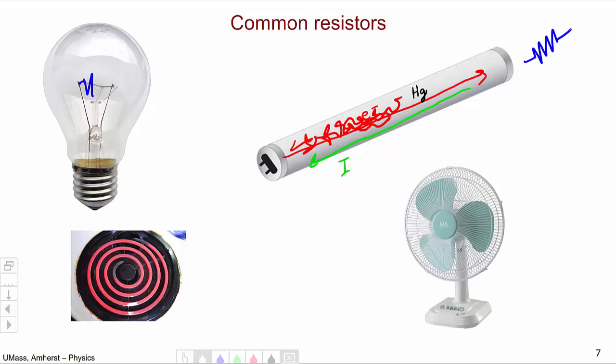Finally an electric motor like in a fan can be thought of as a resistor. So in a circuit diagram you might think of this fan as just a resistor.